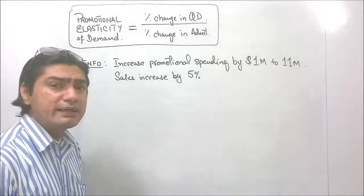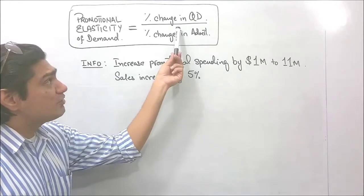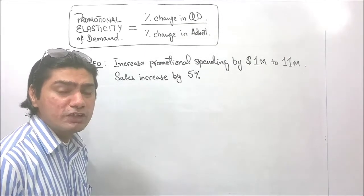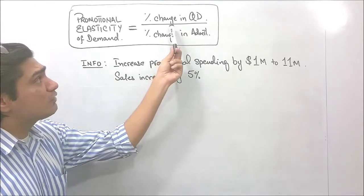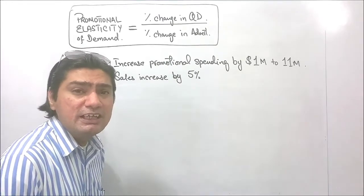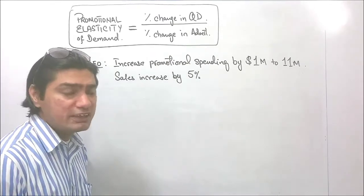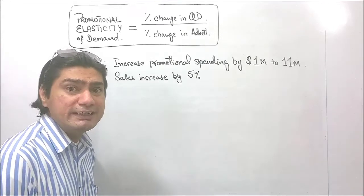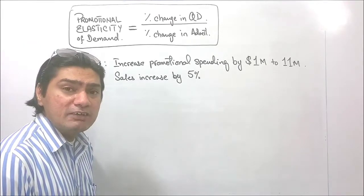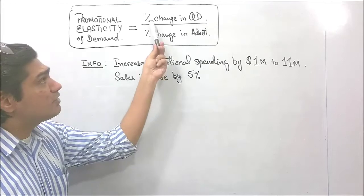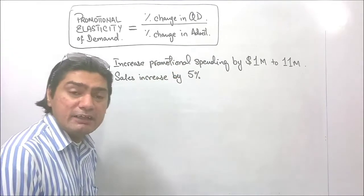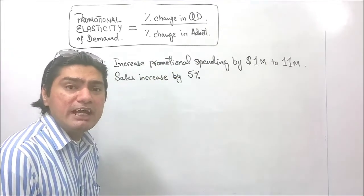Promotional elasticity of demand tries to calculate how much the quantity demanded has changed as a result of whatever you are doing in terms of promotion or advertising. The formula we use is the percentage change in quantity demanded divided by the percentage change in advertising, promotional activity, or marketing — whatever they have given you in the data related to promotional spending.